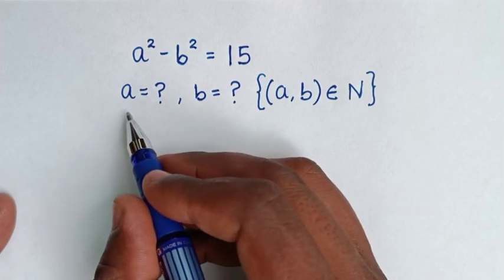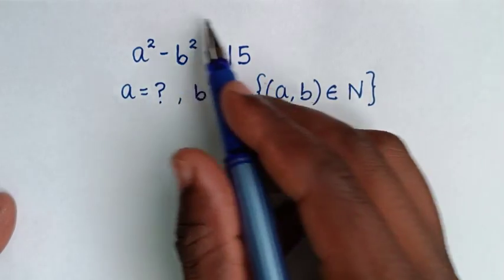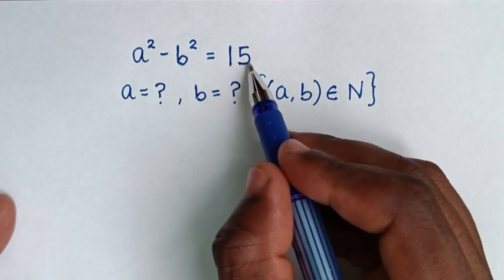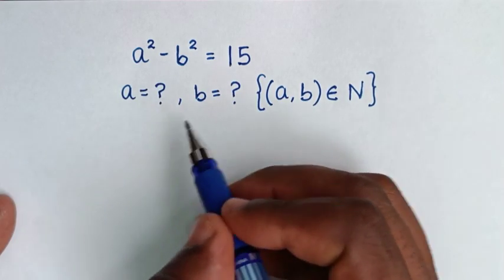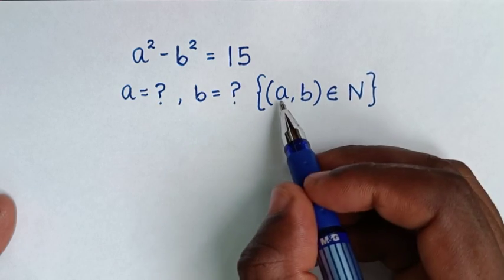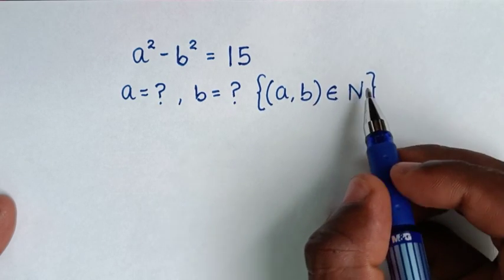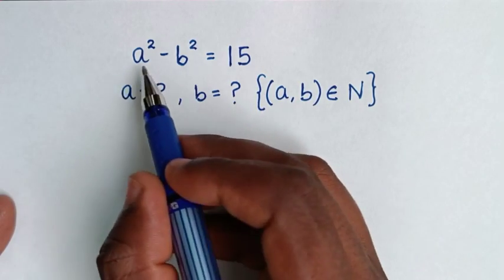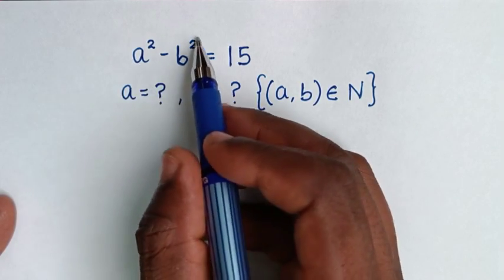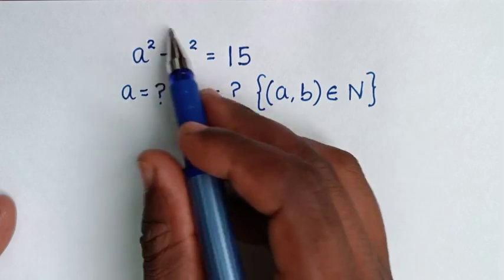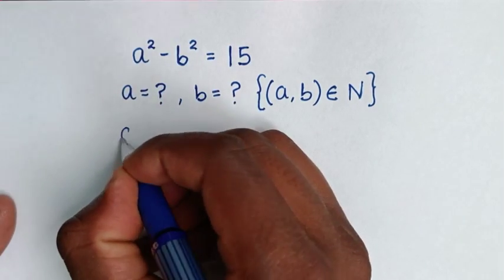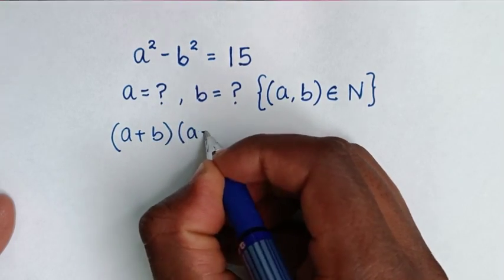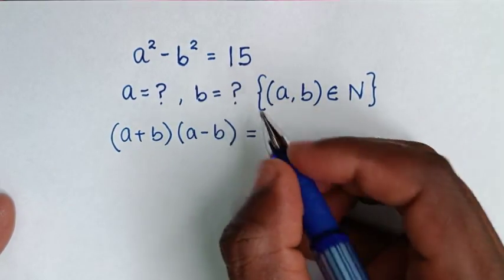Hello, you are welcome to solve this math problem: a squared minus b squared is equal to 15. We need to find the values of a and b such that a, b are elements of natural numbers. On the left side, a squared minus b squared is in the form of a difference of squares, so it is the same as (a + b)(a - b) which equals 15.